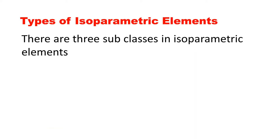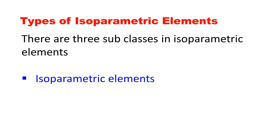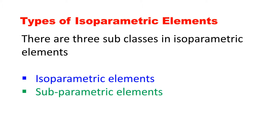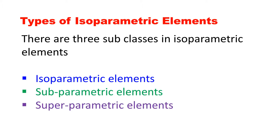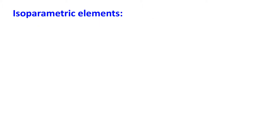There are three types of isoparametric elements. First is simply isoparametric element. Second, subparametric element. And third, superparametric elements. We will discuss all these three types one by one with suitable examples. So first, isoparametric elements.